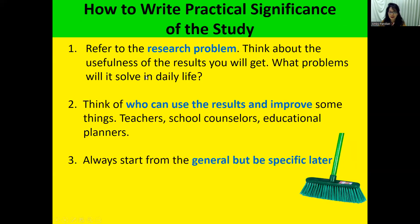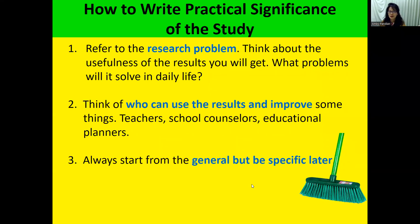How to write practical significance: refer to the research problem, then think of the usefulness of the results. What problems will it solve in daily life? Think of who can use the results — teachers can use them, school counselors for certain topics, educational planners for others. Be careful about mentioning students as beneficiaries because students don't usually read journal papers. Always start from general, but be specific later.